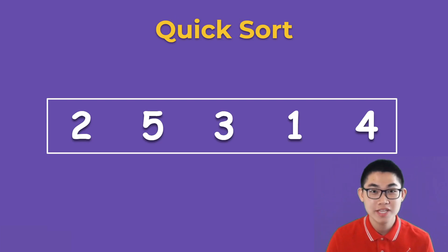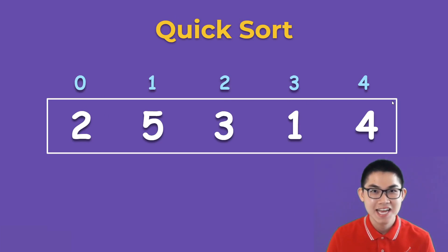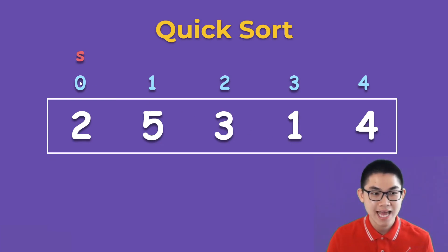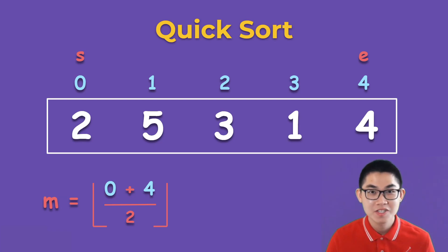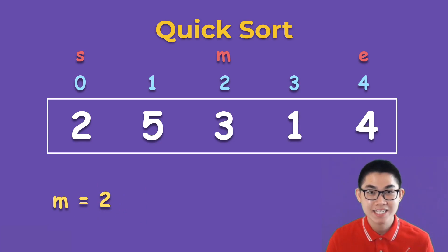The first step is to put the indexes onto our array. The second step is to put the start and the end onto this array, so the start is S and the end is E. The third step is to calculate the mid-index, and the formula is S plus E divided by 2. S is currently at index 0, E is at 4, so we get 4 divided by 2, which gives us 2. So mid is at index 2.